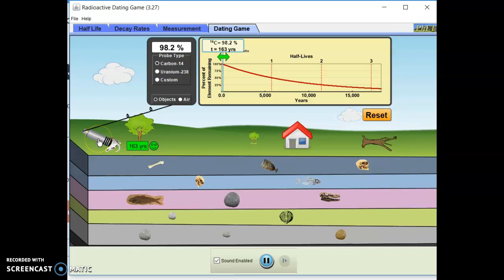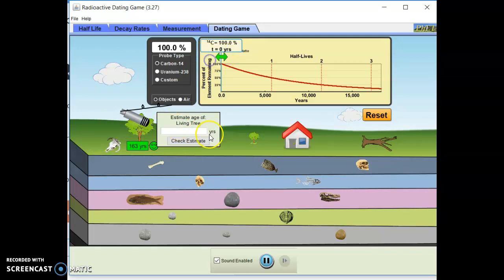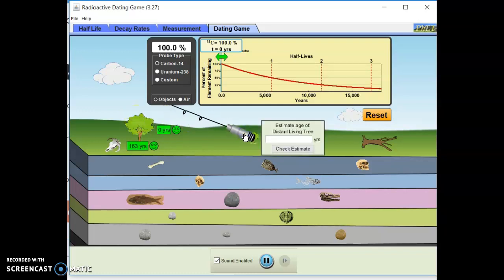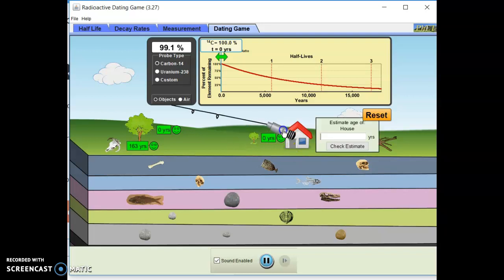Living tree. All right. 100. This is zero, so we're probably looking at months. Okay. Doing good so far. House. 99.1. About 79, 80 years.